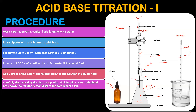For example, if the reading comes to 7.1, we will save that observation. The observation table will be filled. When the pink color comes, the contents of the conical flask will be discarded.